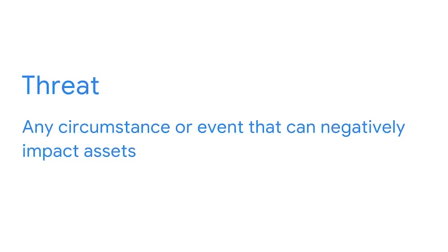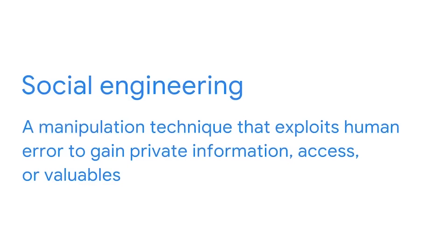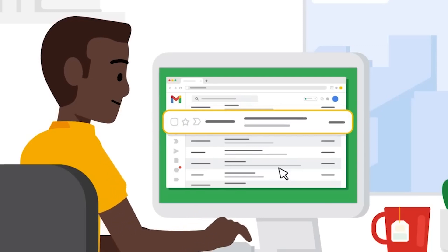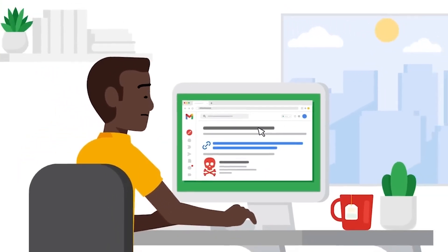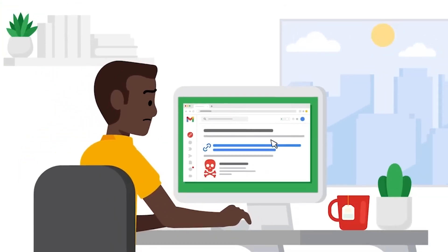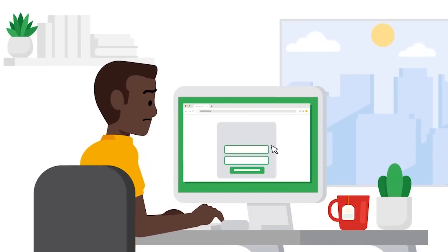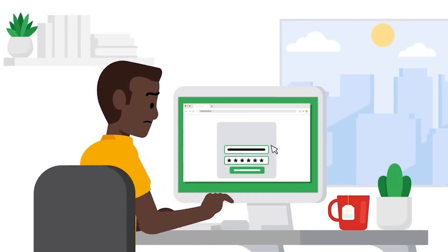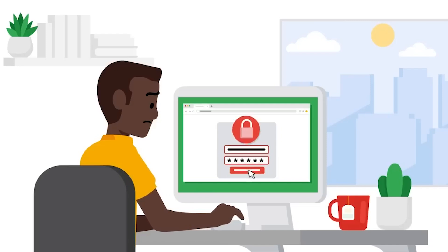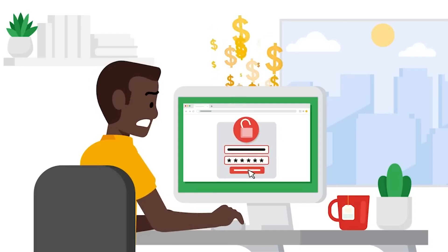A threat is any circumstance or event that can negatively impact assets. One example of a threat is a social engineering attack. Social engineering is a manipulation technique that exploits human error to gain private information, access, or valuables. Malicious links in email messages that look like they're from legitimate companies or people is one method of social engineering known as phishing. Phishing is a technique used to acquire sensitive data such as usernames, passwords, or banking information.